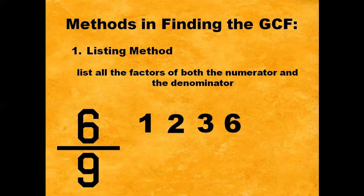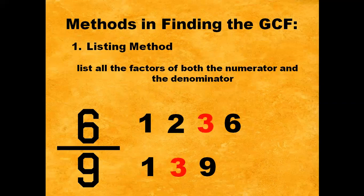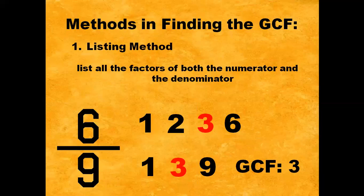How about nine? What two numbers multiplied together give us nine? We can have one times nine, and three times three will give us nine. So the factors of nine are one, three, and nine. The greatest common factor of six and nine is three.